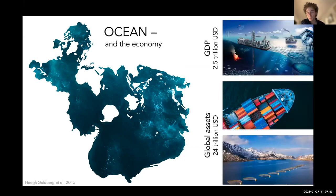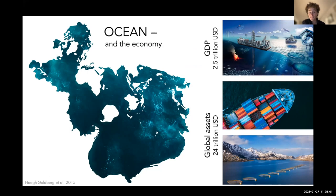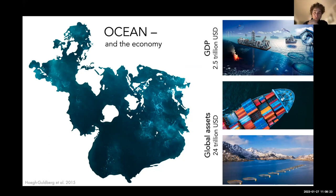The ocean is an engine of the climate system, absorbing excess heat and CO2, and regulating currents and streams across the planet. Economically, the OECD estimated that if it were a country, the ocean would be the seventh largest economy in the world — a conservative estimate of 2.5 trillion US dollars. Including direct assets like fisheries, aquaculture, and transport brings that figure close to 24 trillion. Two-thirds of those assets rely on a healthy ecosystem.